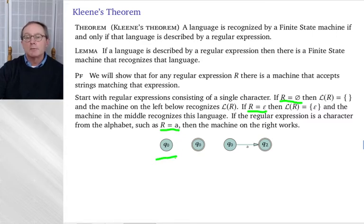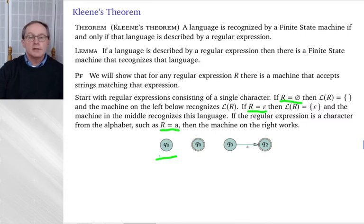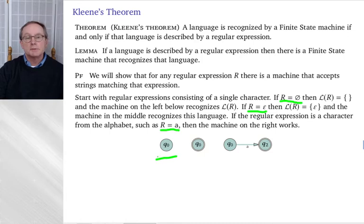For the empty set case, I give it a start state because a finite state machine must have one, but it doesn't have any final states, so it can't accept any strings. This is a non-deterministic machine — there's no arrow leaving Q0 for input A, for example. But we already know that if you have a non-deterministic machine, you can convert it to a deterministic one.